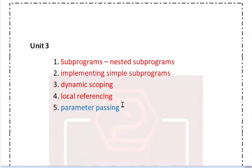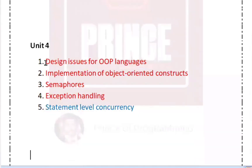If you look at the C language, the parameter passing is an important concept. That's why, if you look at parameter passing, then semaphores, and then one more question — exception handling. If you look at the four questions, we can expect Part C on this. The semaphores are important, and then implementation of object-oriented constructs is important.